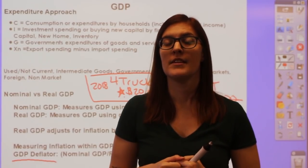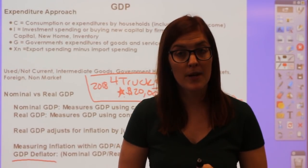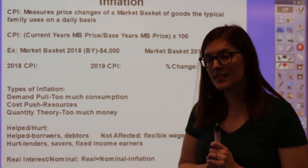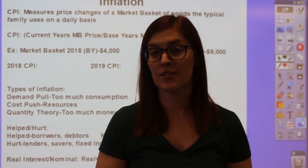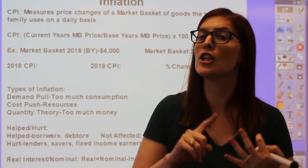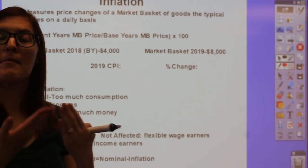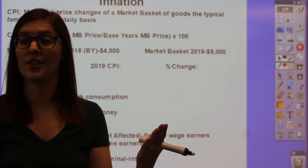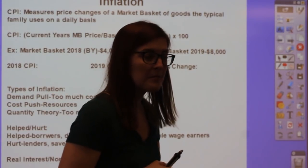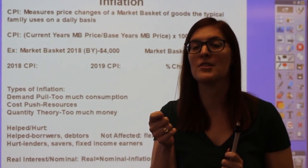Now we'll talk about how we measure inflation in the American economy through the Consumer Price Index, or CPI. CPI measures inflation by tracking a market basket of goods that a typical family consumes—food, transportation, clothing, education. They measure the prices of those same goods year to year; if prices go up, there's been inflation. However, CPI is so simplistic that it ends up overstating inflation, and there are three criticisms.